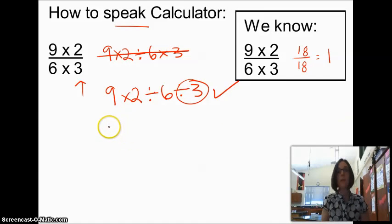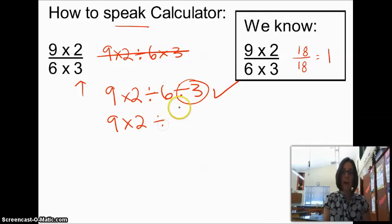You could also use parentheses, but that's extra button pushing. That would be 9 times 2 divided by, and then all of this underneath would be 6 times 3. So if we try that in the calculator.